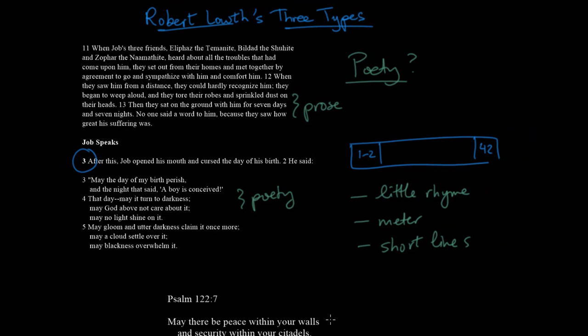That's the point where we turn to Robert Loth. What Loth teaches us in the 18th century is that there's one main feature of Hebrew poetry that really stands out, and that's what he refers to as parallelism — Hebrew parallelism — the idea that lines run parallel to each other and have a lot in common with each other, although sometimes there's a contrast. Each set of lines has a relationship to each other. It's not so much about rhyme; it's about the way the lines relate to one another.